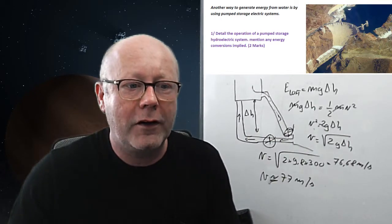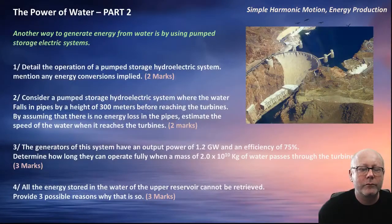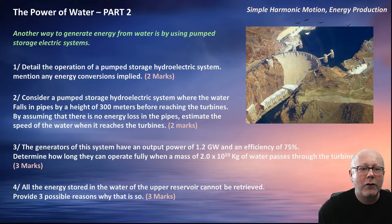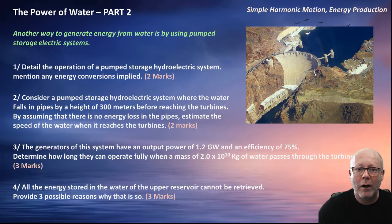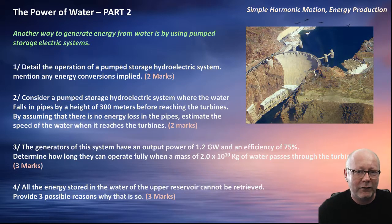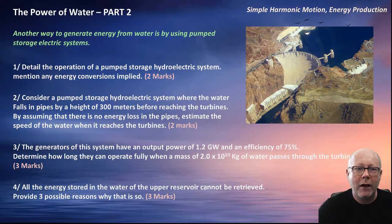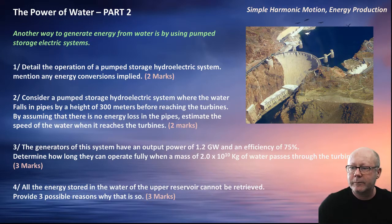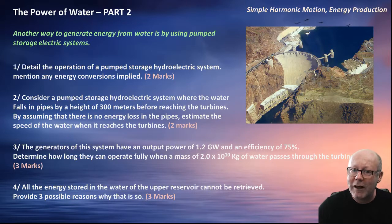Let's check the third question. The generators of this system have an output power of 1.2 GW and an efficiency of 75%. Determine how long they can operate fully when a mass of 2.0 by 10 to the 10 kg of water passes through the turbines. Three marks. So, figure it out and come back.